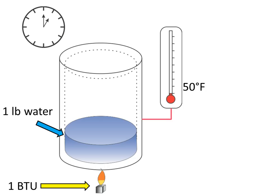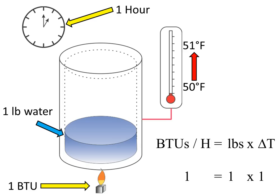This is one pound of water. Before starting the process, it is at 50 degrees Fahrenheit. This clock indicates the duration of the process — always one full hour. By definition, the process will raise the temperature of water 1 degree Fahrenheit. The mathematical expression of the process is: BTU per hour equals pounds of water multiplied by delta T, where delta T is the temperature difference before and after the process. In this example, 1 BTU per hour equals 1 pound of water multiplied by delta T, which is 1 degree Fahrenheit.